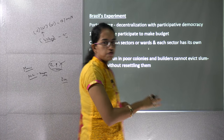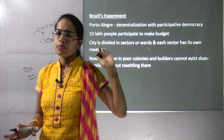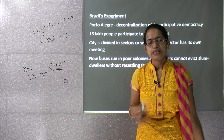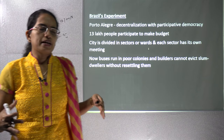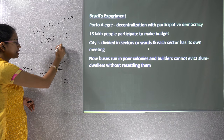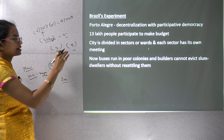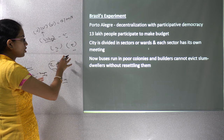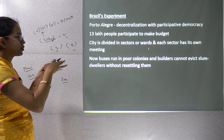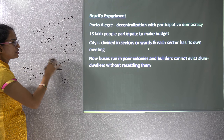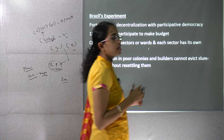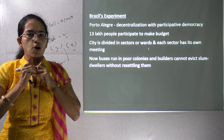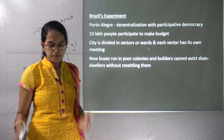A good example of decentralization is seen in the city of Porto Alegre in Brazil, where participative democracy was practiced. The city was divided into wards or sectors, each with its own meetings. As a result, buses now run into poor colonies and builders cannot displace slum dwellers without resettling them. These developments came because of active division of power and the involvement of local people in budget and resource allocation, ensuring even the poor get maximum benefit.